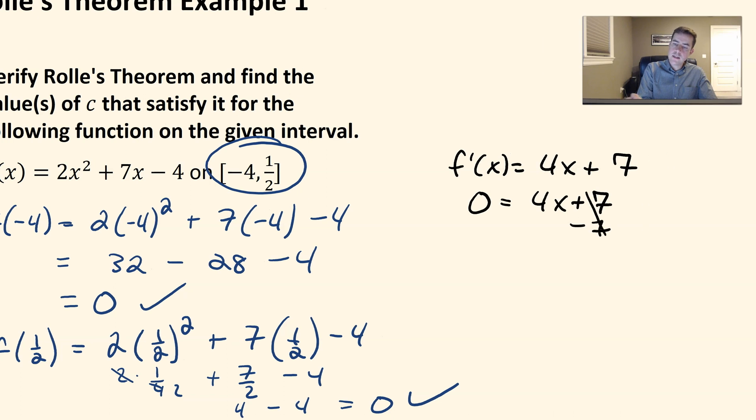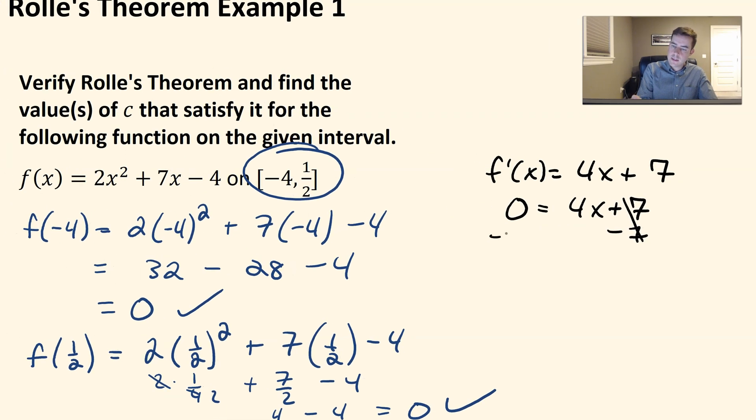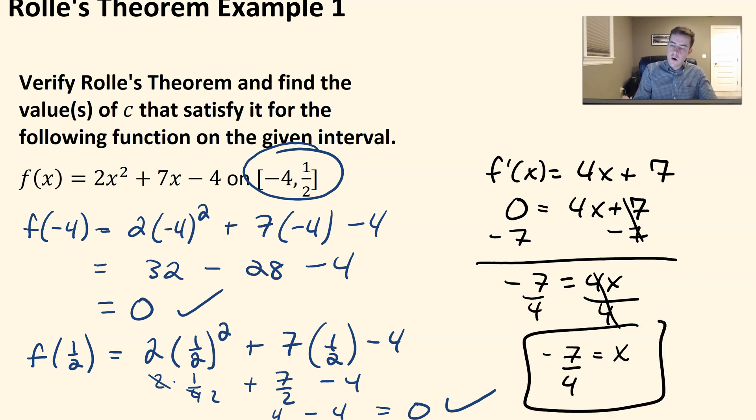I would simply minus off 7, minus off 7, and we get negative 7 is equal to 4X. And then simply divide by 4. So we get X is negative 7 over 4, which surely is in that interval. So that would be my X value, which we know is the same thing as our C value here. So C would be negative 7 over 4, and that's where our slope is going to be 0, or our derivative is going to be equal to 0.